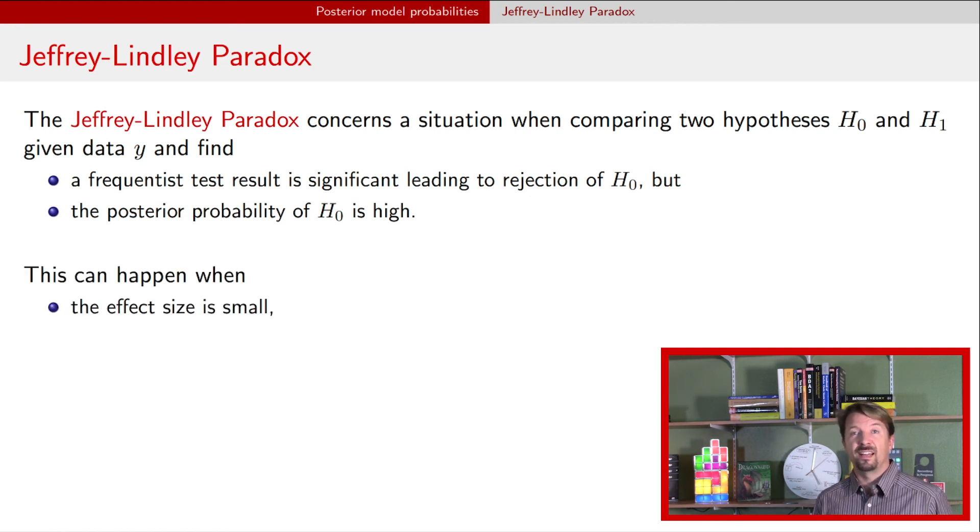The first thing is that the effect size has to be small. You see in our previous problem, we had the 0.49 versus 0.5 on a null value. So that's what we mean by that effect size being small—those two probabilities are pretty close to each other. Secondly, you need to have a large number of observations. So in this case, the example we had, we had 10,000 observations.